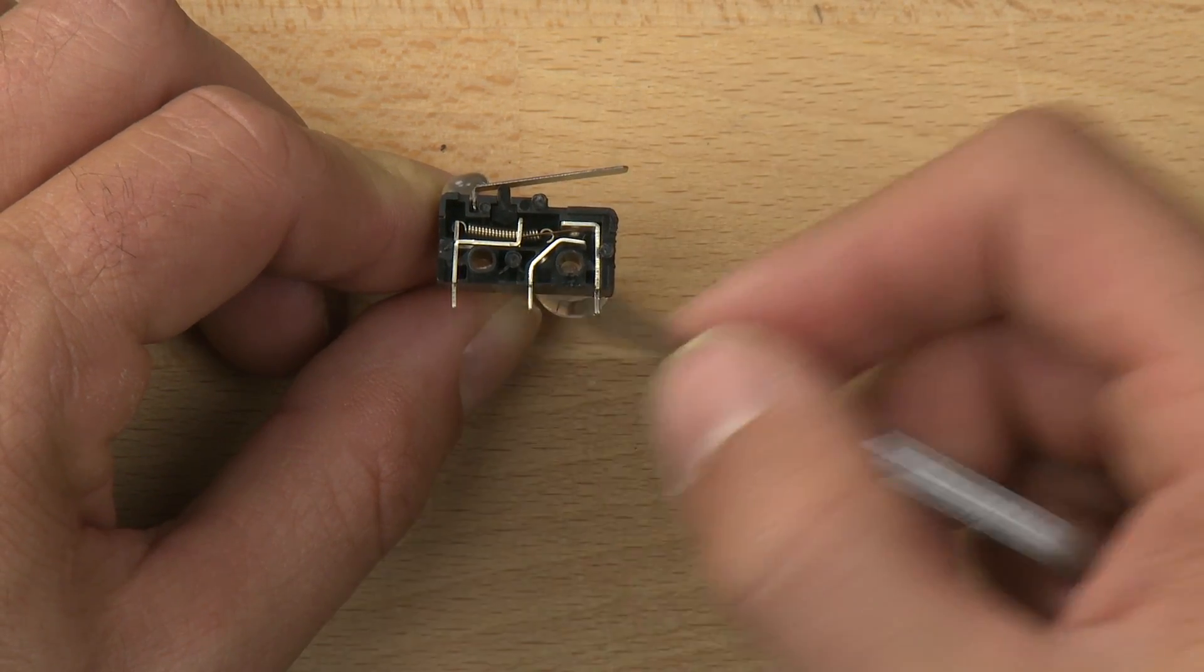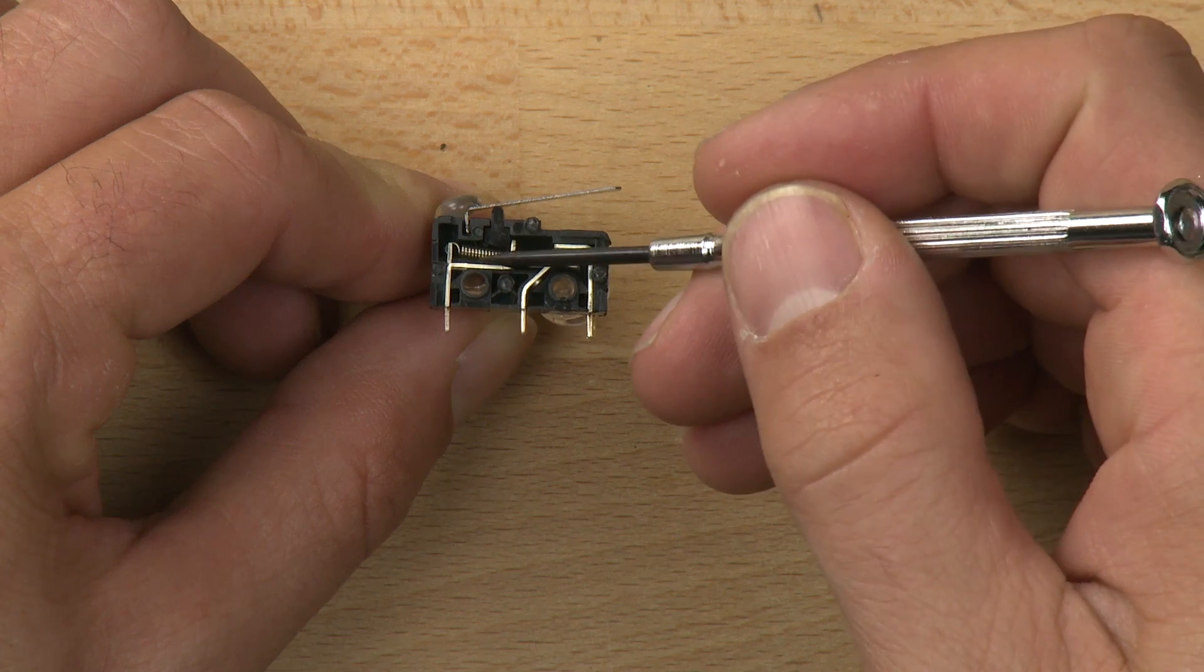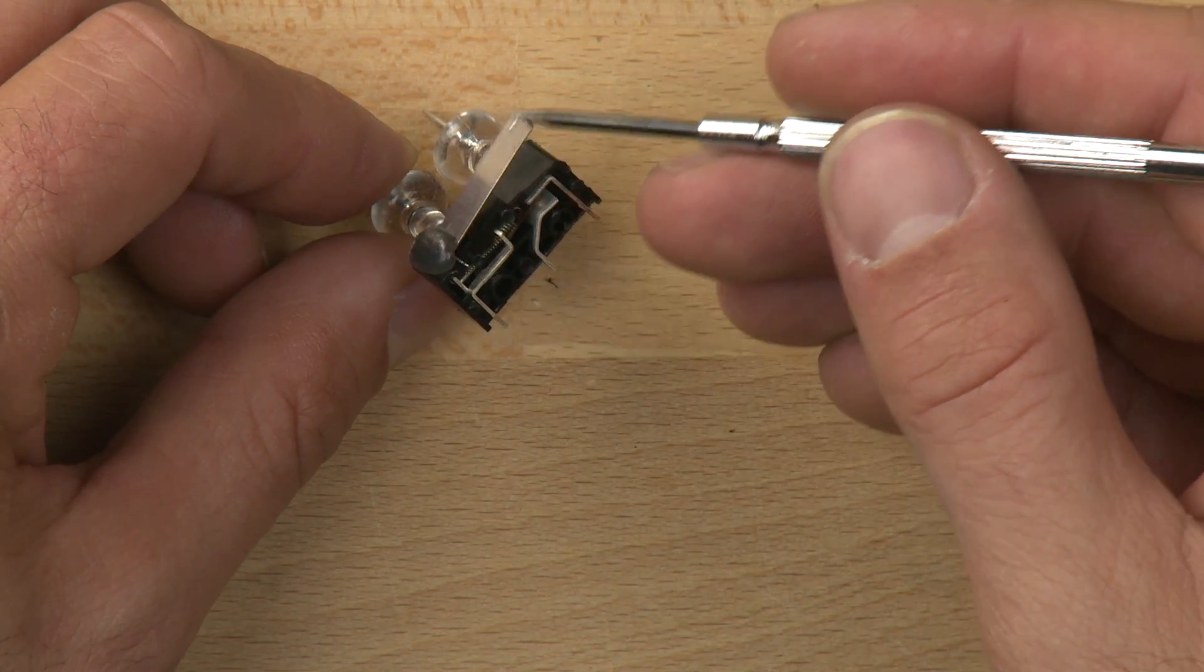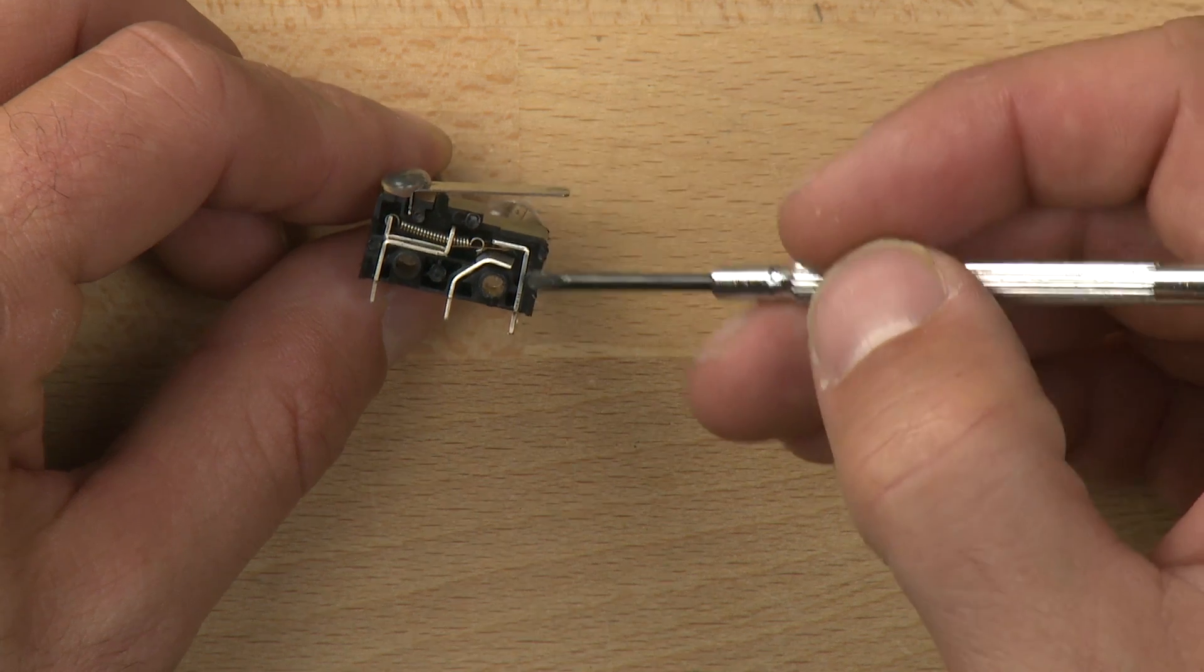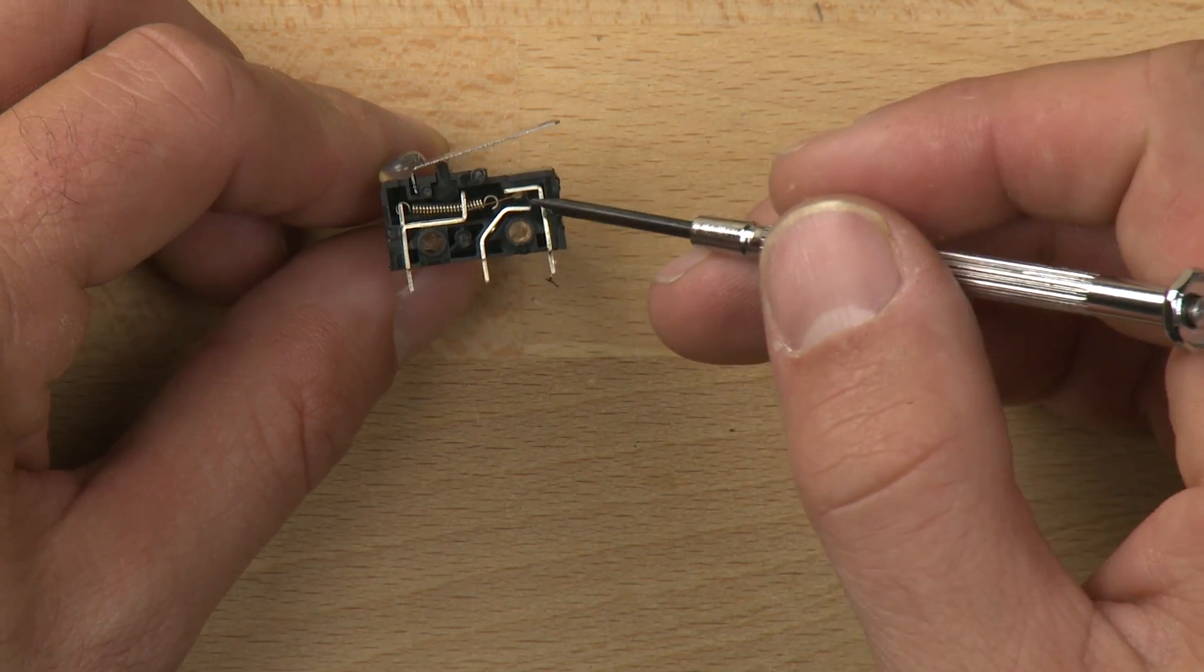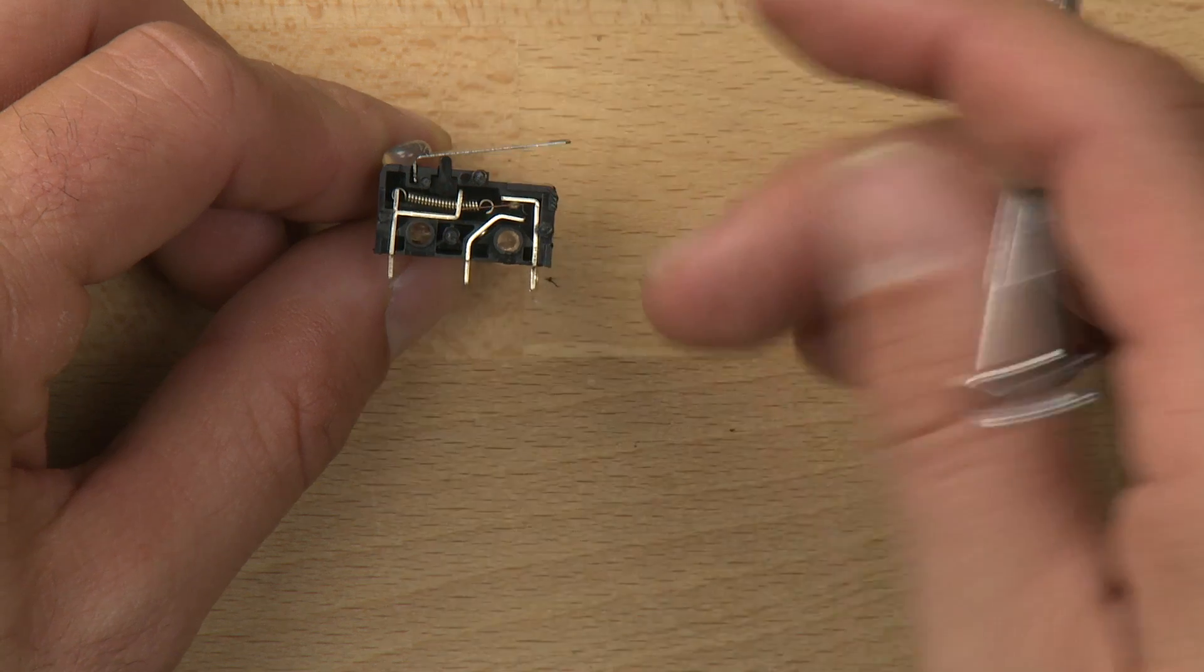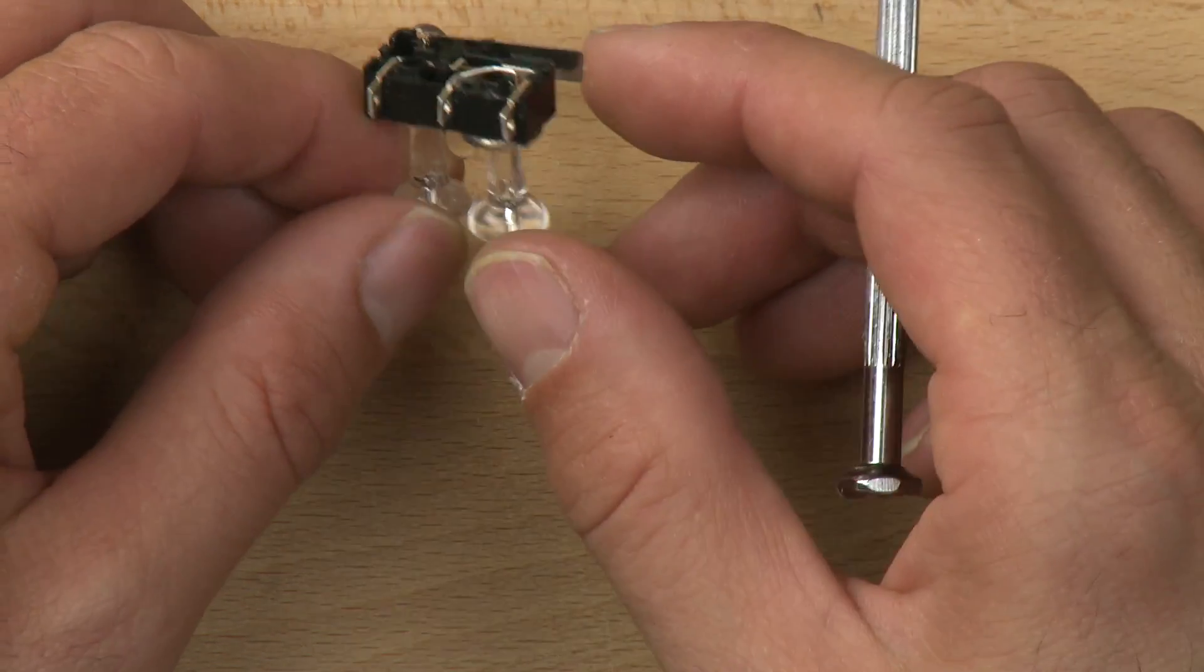I believe these pieces are made out of aluminum. It looks like the spring is spring steel. Looks like we have the lever here, which is probably nickel plated steel. We have a copper contact that the spring is connected to. I think the housing is made out of ABS.